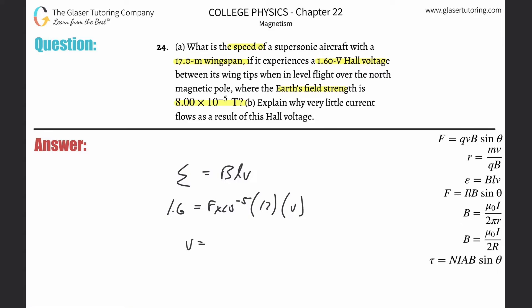Just simply take 1.6, then divide it by 8 times 10 to the minus fifth, and then divide that again by 17. This works out to be 1.18 times 10 to the...